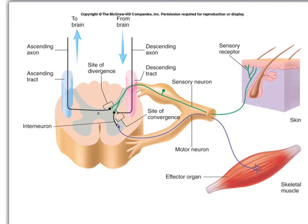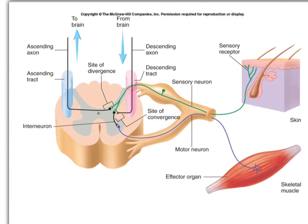In this picture we can see tracts at work running through the cord. We have a withdrawal reflex again: starting with a sensory receptor picking up information traveling along the sensory neuron to the cord, and then an interneuron converging on a motor neuron as part of that withdrawal reflex. We can also have that sensory information heading up to the brain along an ascending tract.